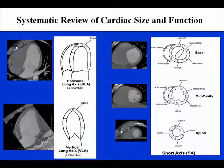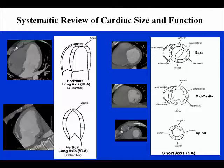Shown here are general representations using the American Heart Association 17-segment model of the left ventricular function, demonstrating the horizontal long axis, vertical long axis, and a variety of basal, mid-cavity, and apical short axis views.